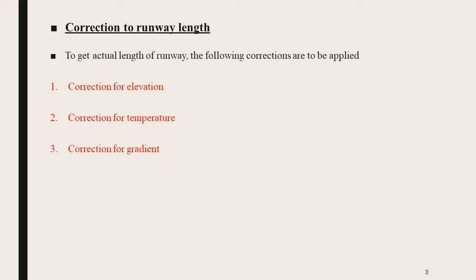Runway length data correction — three corrections are applied in order: correction for elevation, correction for temperature, correction for gradient. This is the order in which the corrections are applied: elevation correction first, then temperature correction, then gradient correction.